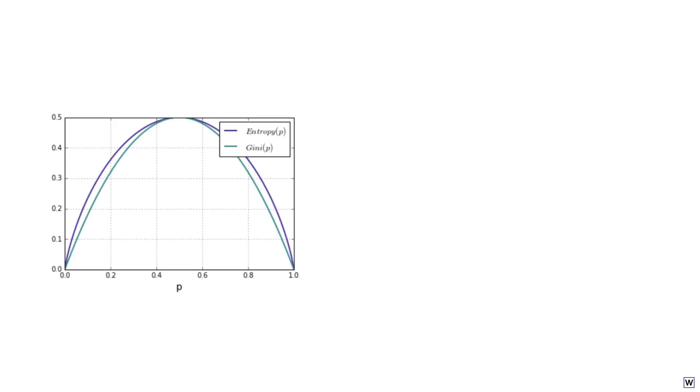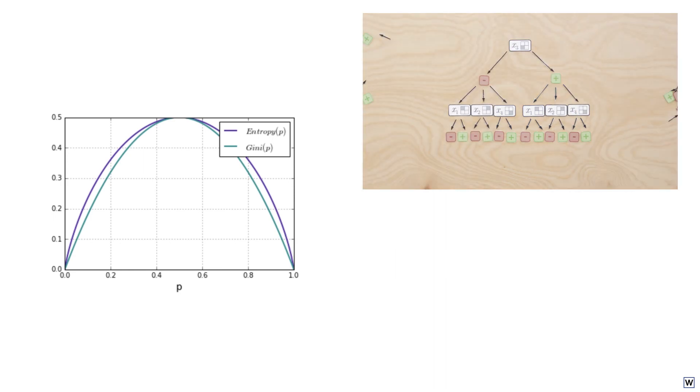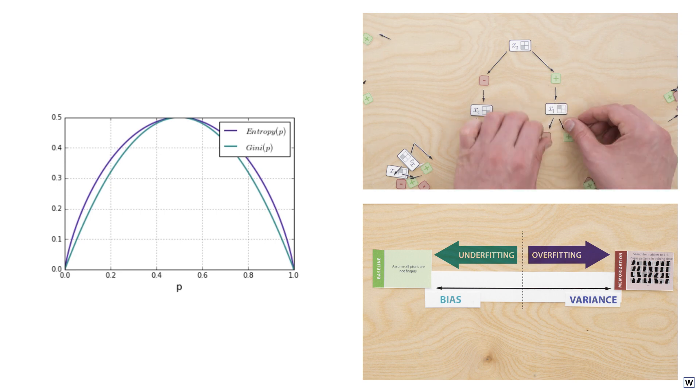Now, it's time to build our tree. We have two split heuristics, information gain and Gini impurity to choose from. We have a greedy approach to growing our tree that should allow us to find a good solution quickly. We have judiciously chosen to use a small number of our 81 total pixels to ensure we strike the right balance between bias and variance and avoid overfitting. We're finally ready.